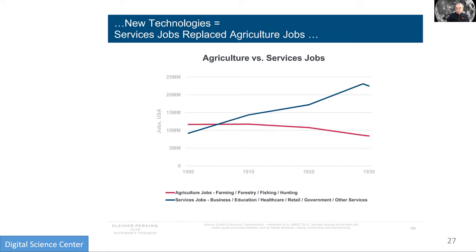Here's another similar example. We know farming is going to giant organizations with lots of automation. Agricultural jobs went from maybe 12 million to 8 million, but service jobs went from 9 million to 23 million. The jobs drastically changed with time — not quite so closely related, but it points out that jobs change dramatically.